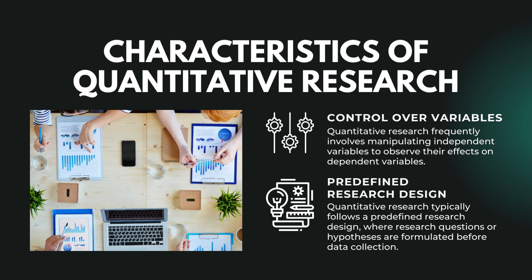Number 5, Control Over Variables — quantitative research frequently involves manipulating independent variables to observe their effects on dependent variables. Number 6, Predefined Research Design — quantitative research typically follows a predefined research design, where research questions or hypotheses are formulated before data collection. The study design outlines the data collection methods, variables to be measured, and the statistical analysis plan.